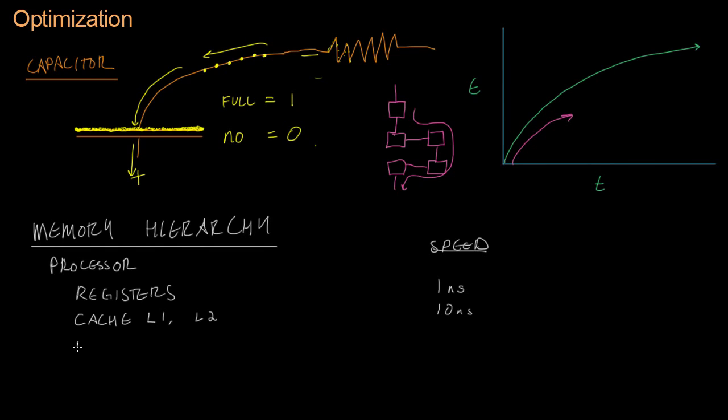Next down from the cache you have main memory. This is the first thing that you may be familiar with. It's what you install in a computer if you go build a computer. This is what they're talking about when they say a computer has 2 gigabytes of RAM. This is also called RAM, Random Access Memory. And it's on the order of about 100 nanoseconds to access.